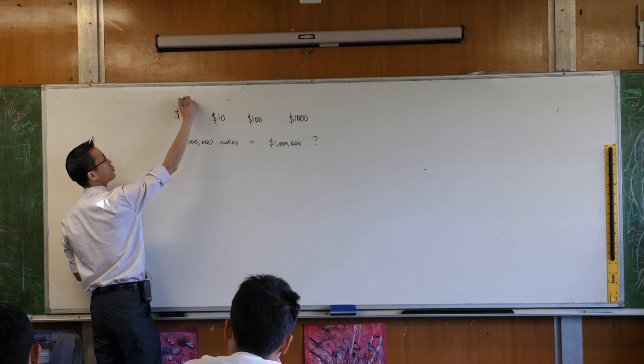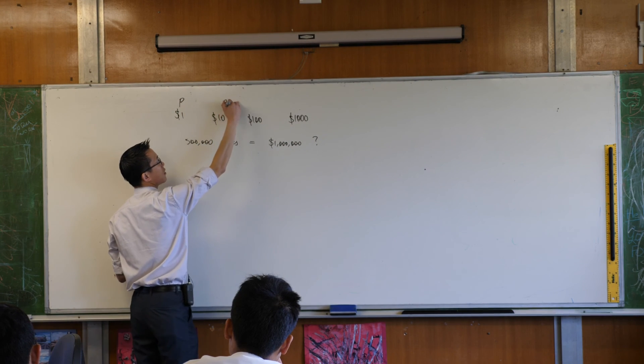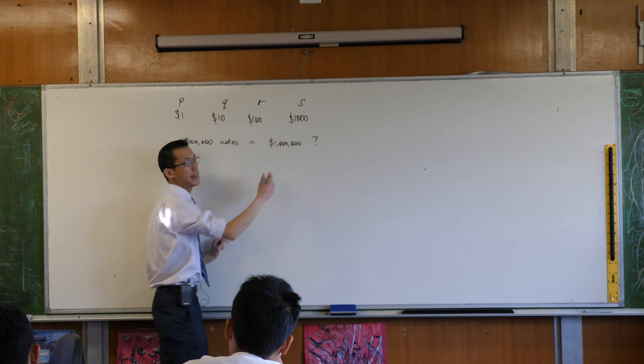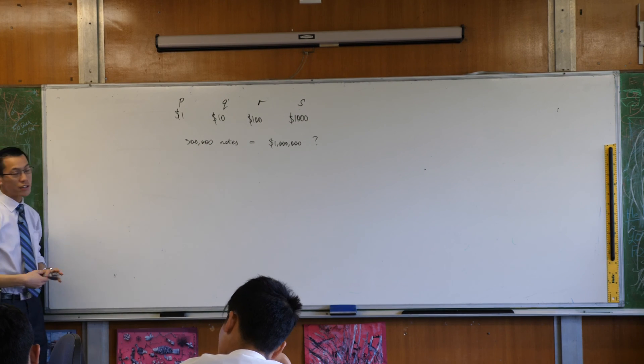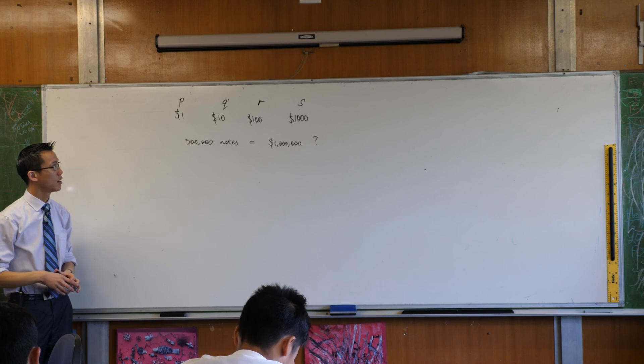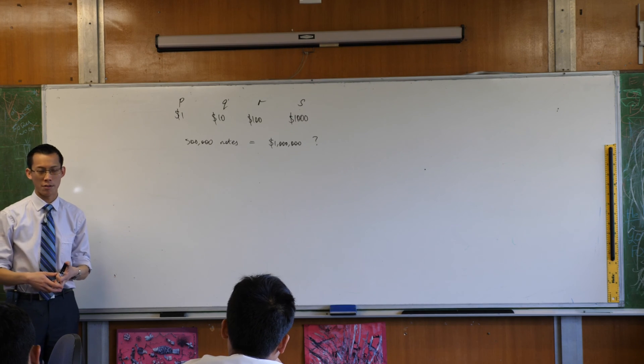So we're just going to give them a name. Let's call them, say, P, Q, R, and S. So I don't know what any of these are equal to, but I know there's going to be some number of them.